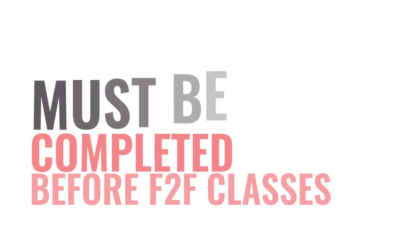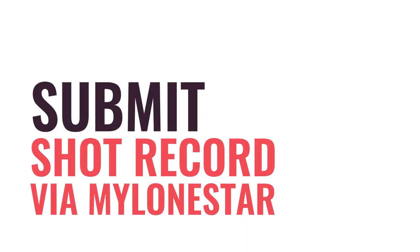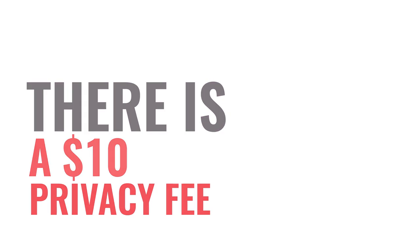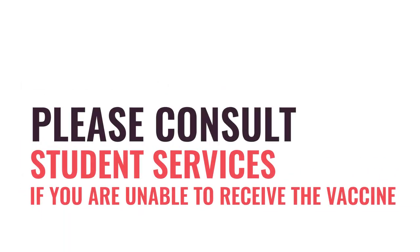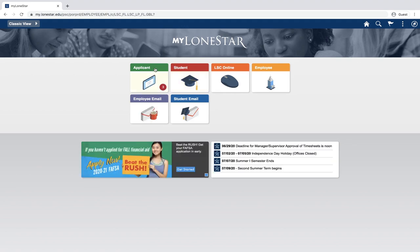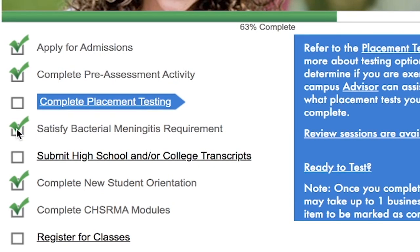Bacterial meningitis: This will need to be completed before you take face-to-face classes. If you have received this vaccine, you can submit your shot record on your My Lone Star account. There is a $10 privacy fee. If you are not able to receive the shot for personal reasons, please consult a student service member for further assistance. To upload your shot record showing your bacterial meningitis vaccine, go to my.lonestar.edu and log in to your My Lone Star account. Once logged in, proceed to your applicant box. Your checklist will appear on the screen. Click Satisfy Bacterial Meningitis Requirement.